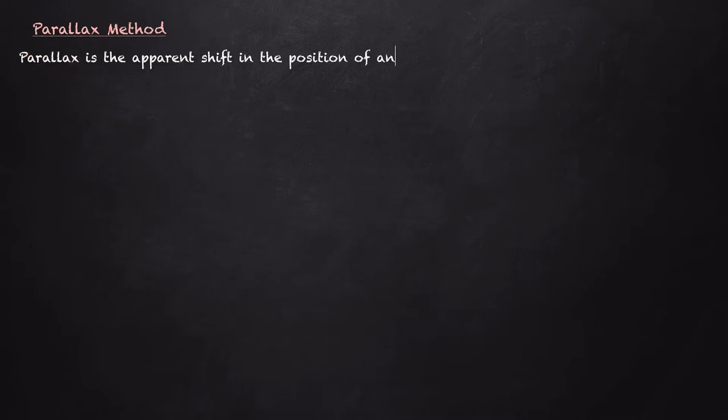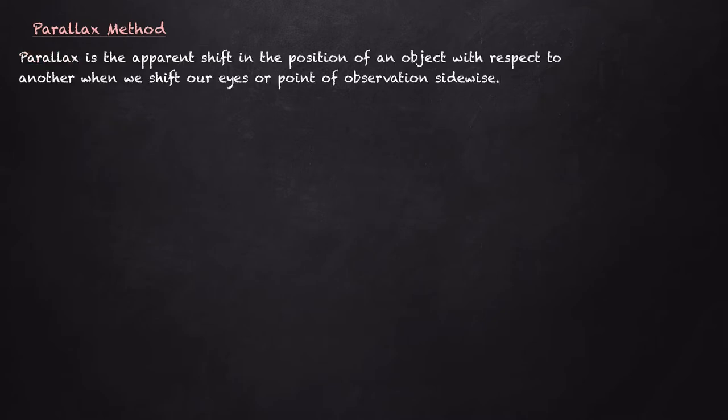Hello everyone. In this video we are going to learn about the parallax method. The first thing we need to know is: what is parallax? Parallax is the apparent shift in the position of an object with respect to another when we shift our eyes or point of observation sidewise.